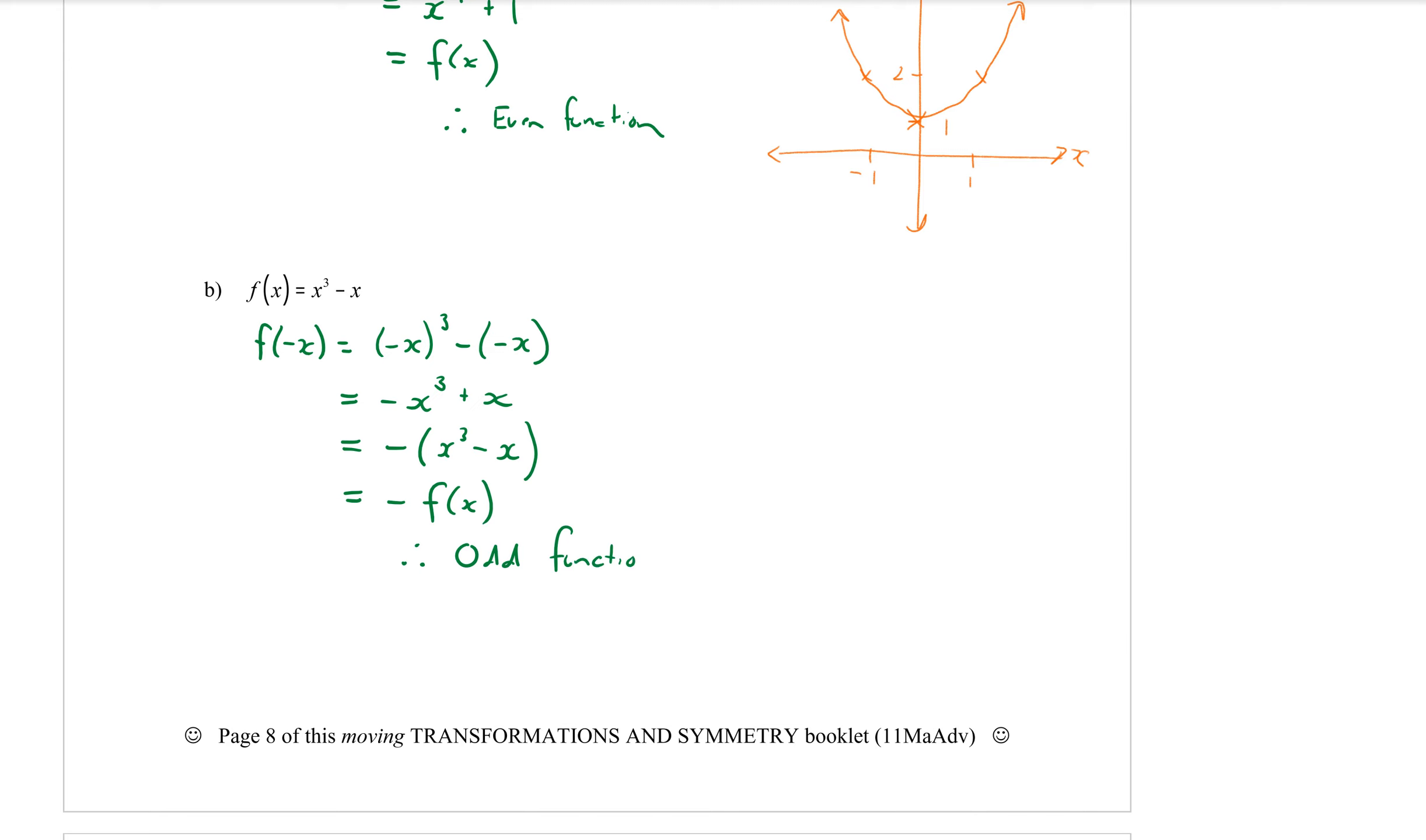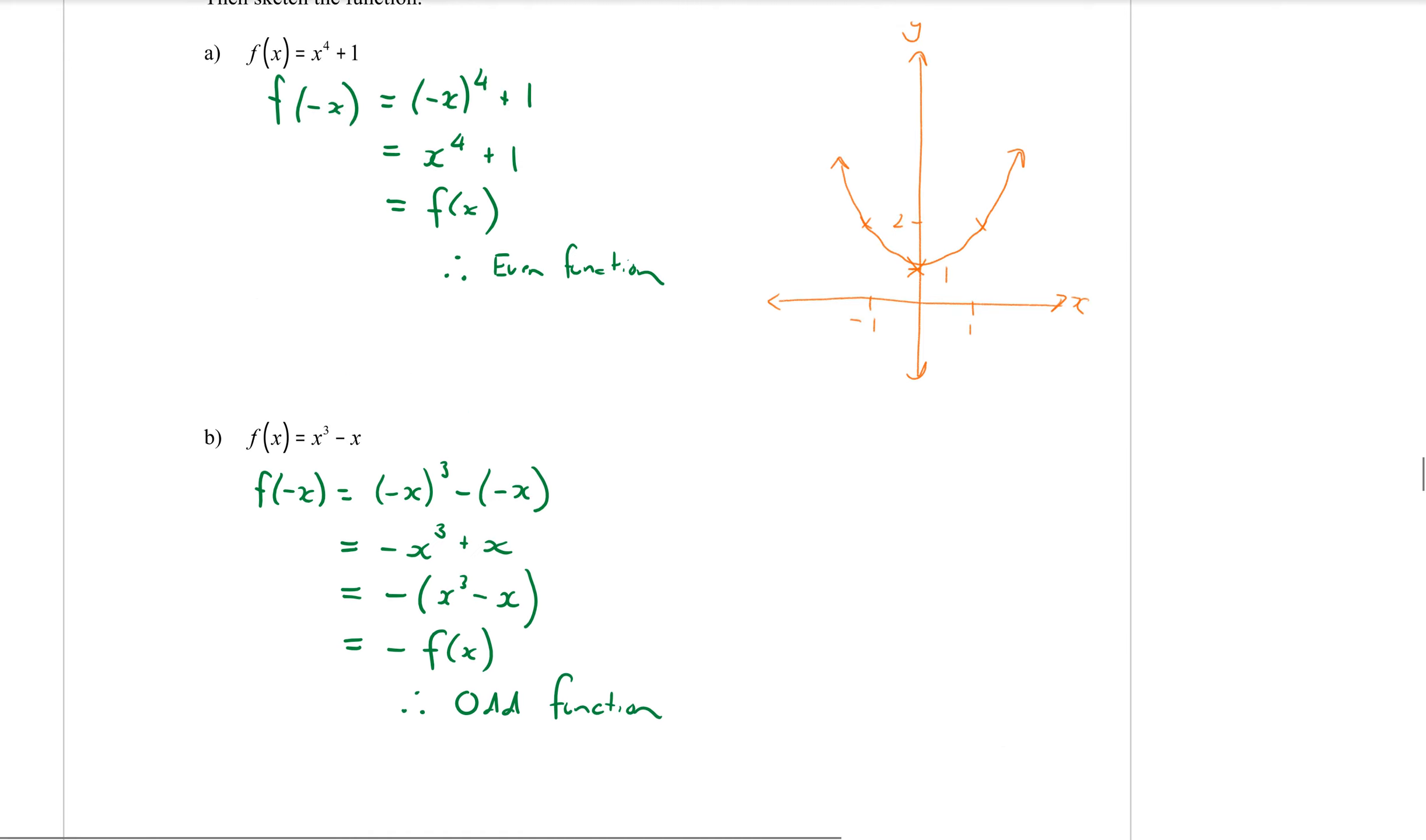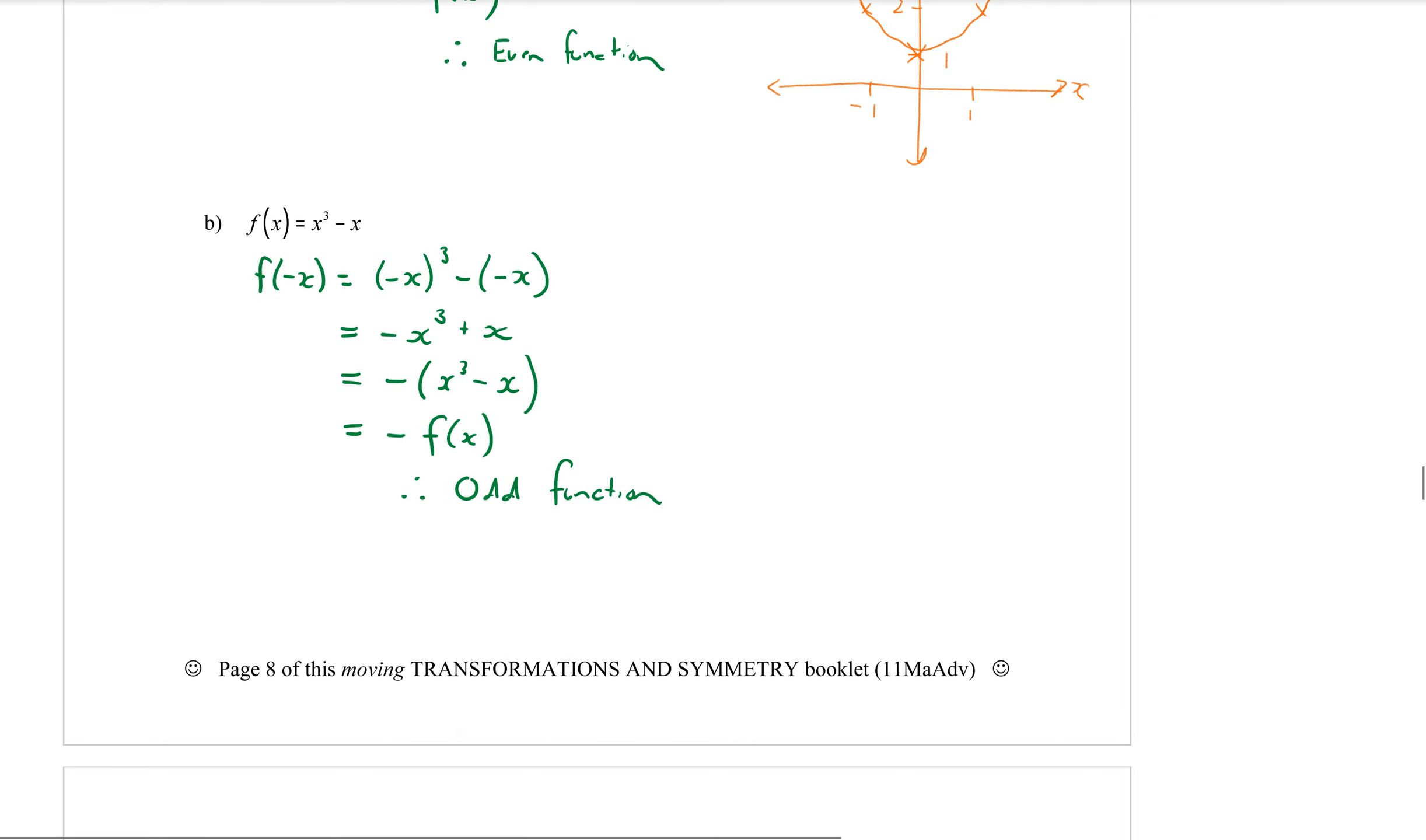Okay so you can see in part a that our graph was symmetrical over the y-axis which is what an even function should be and now let's draw our odd function for b. Now to do that I'm going to need to find some intercepts. So going back to my original equation f of x equals, I'm going to factorize out an x. So it'd be x bracket x squared take away one.